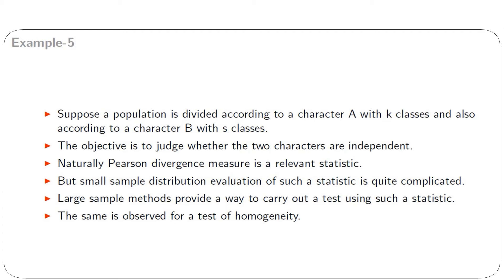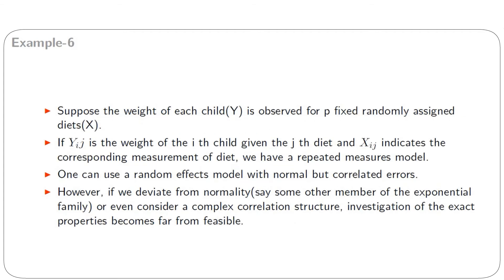Large sample methods provide a way to carry out a test using such a statistic; the same is observed for a test of homogeneity. In Example 6, suppose the weight of each child y is observed for p fixed randomly assigned diets, indicated by x. If y_ij is the weight of the i-th child given the j-th diet, we have a repeated measures model. One can use a random effects model with normal but correlated errors. However, if we deviate from normality or consider a complex correlation structure, investigation of exact properties becomes far from feasible.